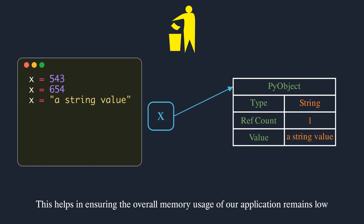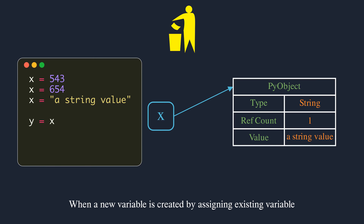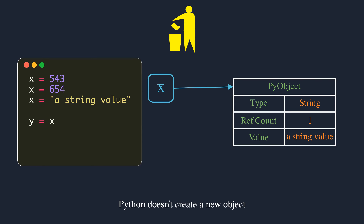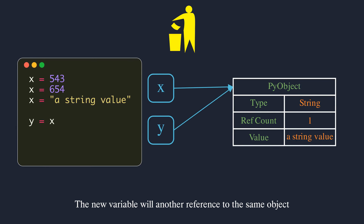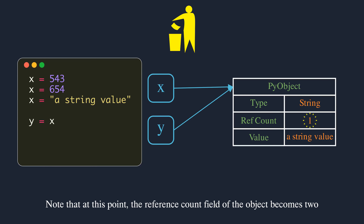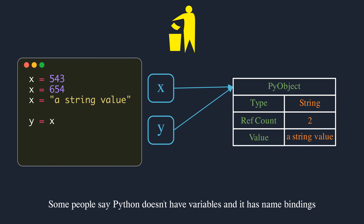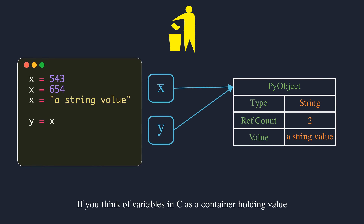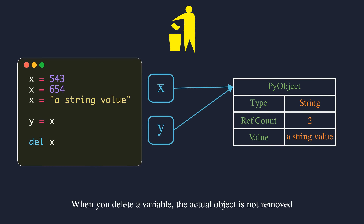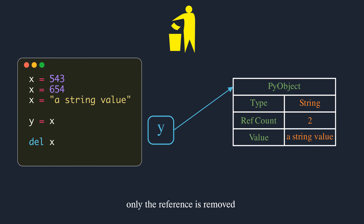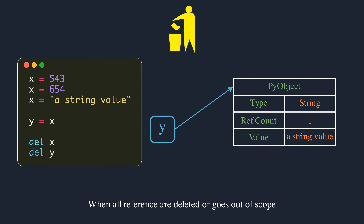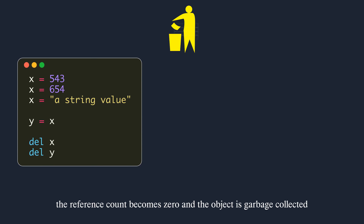Since the variable binding got changed, the reference counts get updated and the garbage collector removes the unused objects, helping ensure overall memory usage remains low. When a new variable is created by assigning an existing variable, Python doesn't create a new object — the new variable will be another reference to the same object, and the reference count becomes two. Some people say Python doesn't have variables but has name bindings. Variables in Python are like label stickers on a container. When you delete a variable, the actual object is not removed — only the reference is removed and the reference count is decremented. When all references are deleted or go out of scope, the reference count becomes zero and the object is garbage collected.